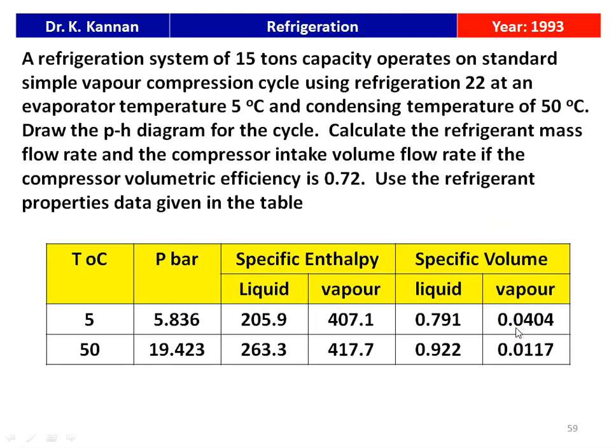The next question is from the 1993 question paper. A refrigeration system of 15 tons capacity operates on a standard simple vapor compression cycle using refrigerant 22 at an evaporating temperature of 5°C and condensing temperature of 50°C. Calculate the refrigerant mass flow rate and compressor intake volume flow rate if the compressor volumetric efficiency is 0.72, using the refrigerant property data given in the table.